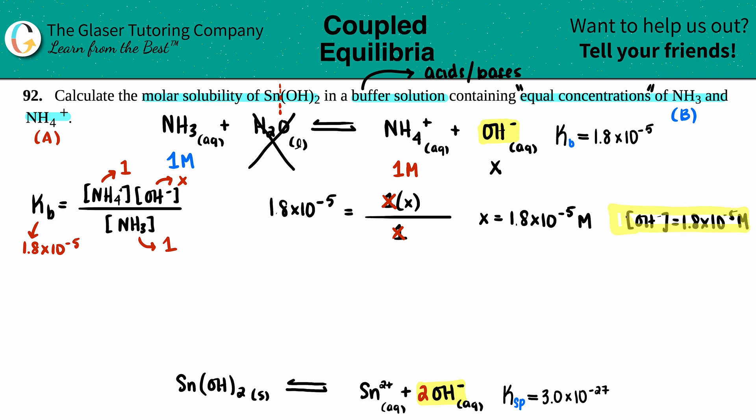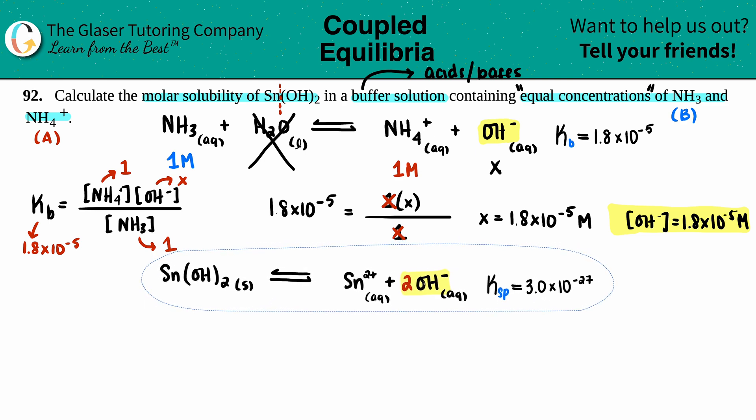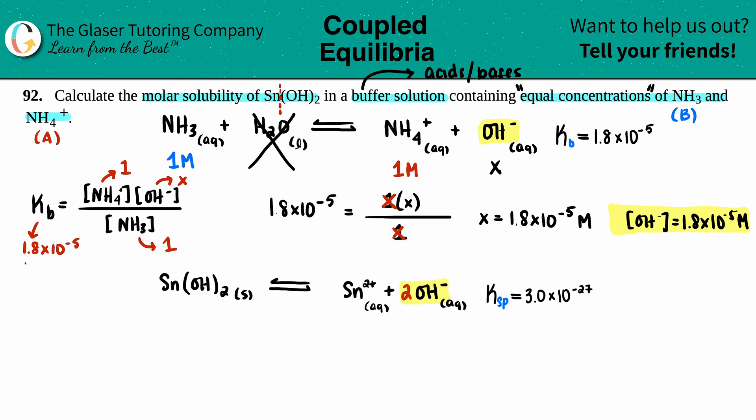I can say that the OH- concentration is 1.8 times 10 to the negative fifth molarity. That is now going to be the link between that buffer and the molar solubility for this one.